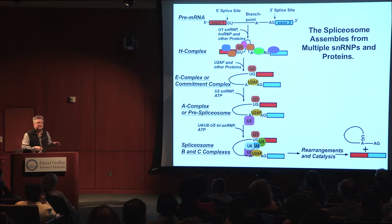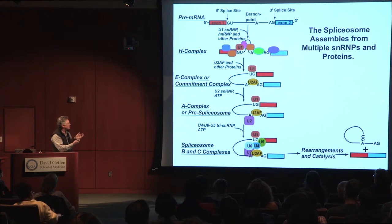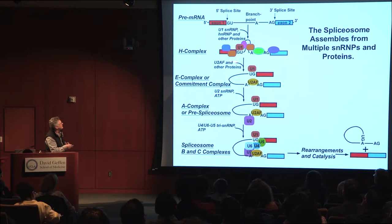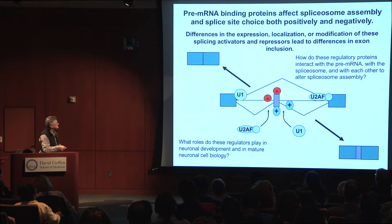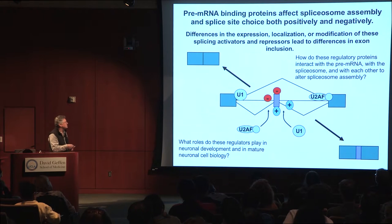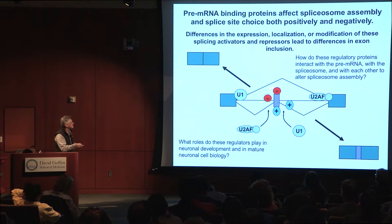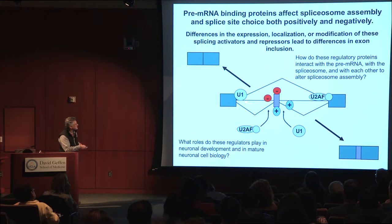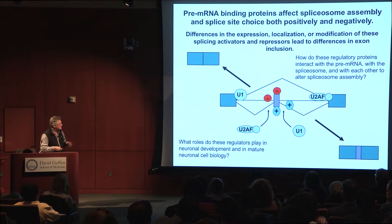All of that happens on each intron removed from the pre-mRNA — there are hundreds of components, probably all regulated in some way. Most understanding of splicing regulation has focused on the early steps, particularly on specialized RNA binding proteins that bind the pre-mRNA and alter spliceosome assembly. There are more than 500, perhaps more than a thousand such proteins in mammalian genomes. The same protein can act either positively or negatively depending on where it binds.